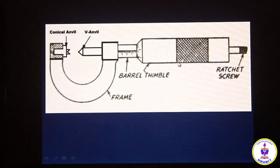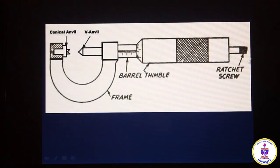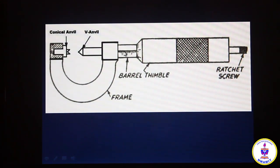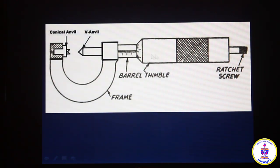Let's see the parts of the screw thread micrometer. It has a conical anvil and a V anvil. There is a frame which holds the anvil. The barrel holds the main scale, which gives dimensions from 0 to 25 mm. There is a thimble with a micrometer scale, knurling to hold, and a ratchet screw mechanism. The ratchet screw ensures constant pressure on the screw thread.